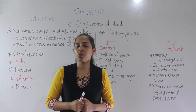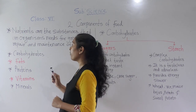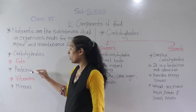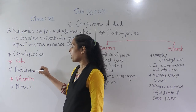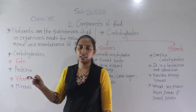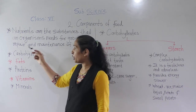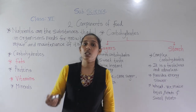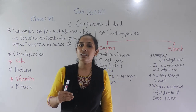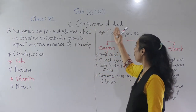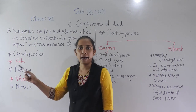So the definition of nutrients: nutrients are the substances that an organism needs for growth, repair, and maintenance of its body. There are different types of nutrients we include in our daily diet. The different nutrients are carbohydrates, fats, proteins, vitamins, and minerals. In this lesson we will discuss all these different nutrients — their sources and the diseases caused by their deficiency.